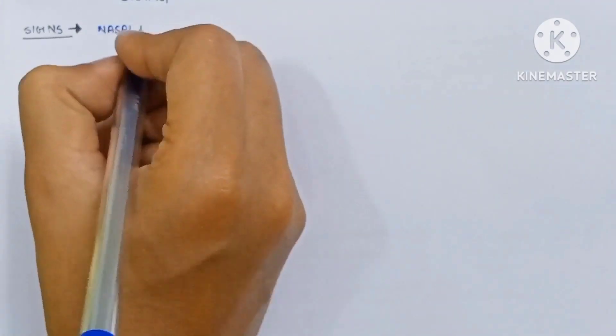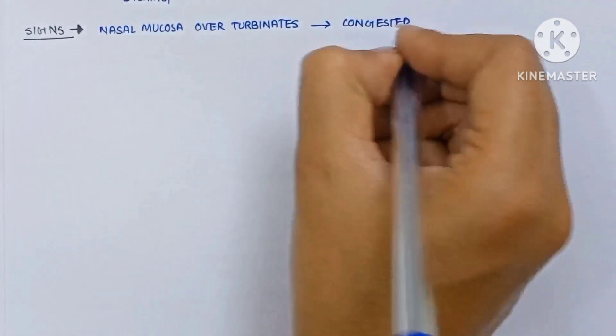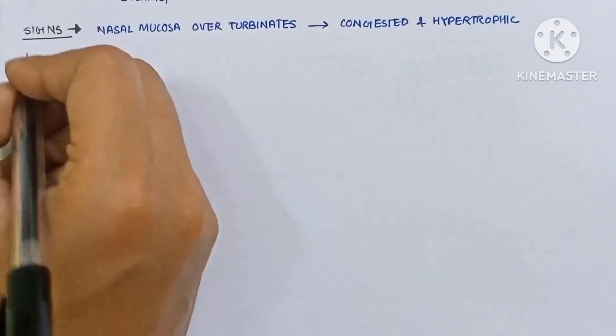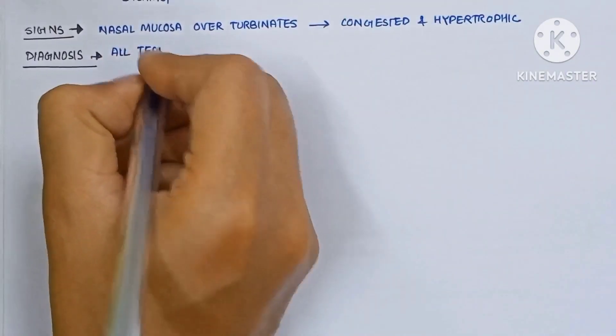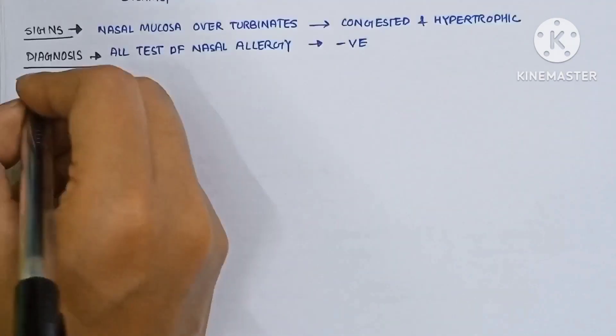Now the signs. Nasal mucosa over the turbinates becomes congested and hypertrophic. The diagnosis is that all tests of nasal allergy are negative.